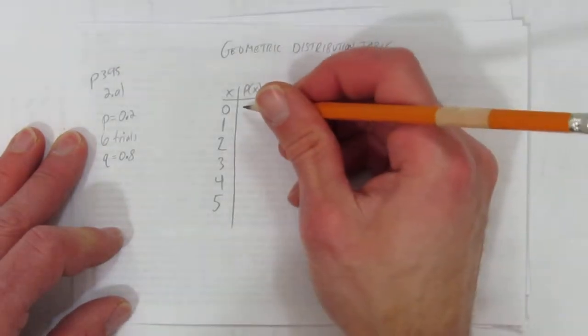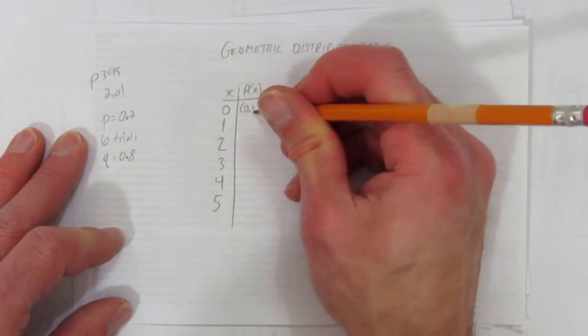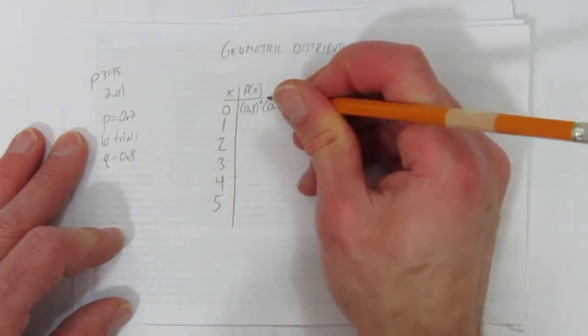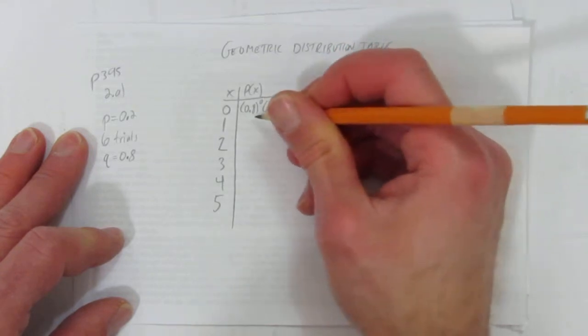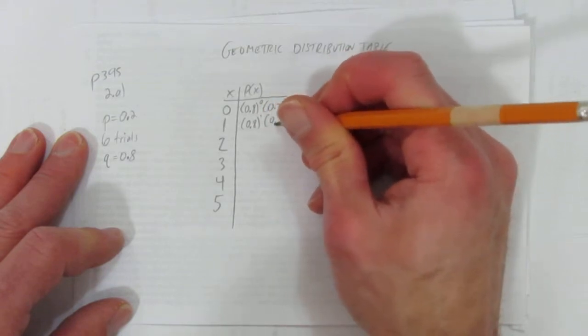Okay, well what's the probability we have no failures, then our success? That's just no failures. You don't even need to put it if you don't want. Then our success. What's the probability of 1 failure? Well, it would be 1 failure, then a success.